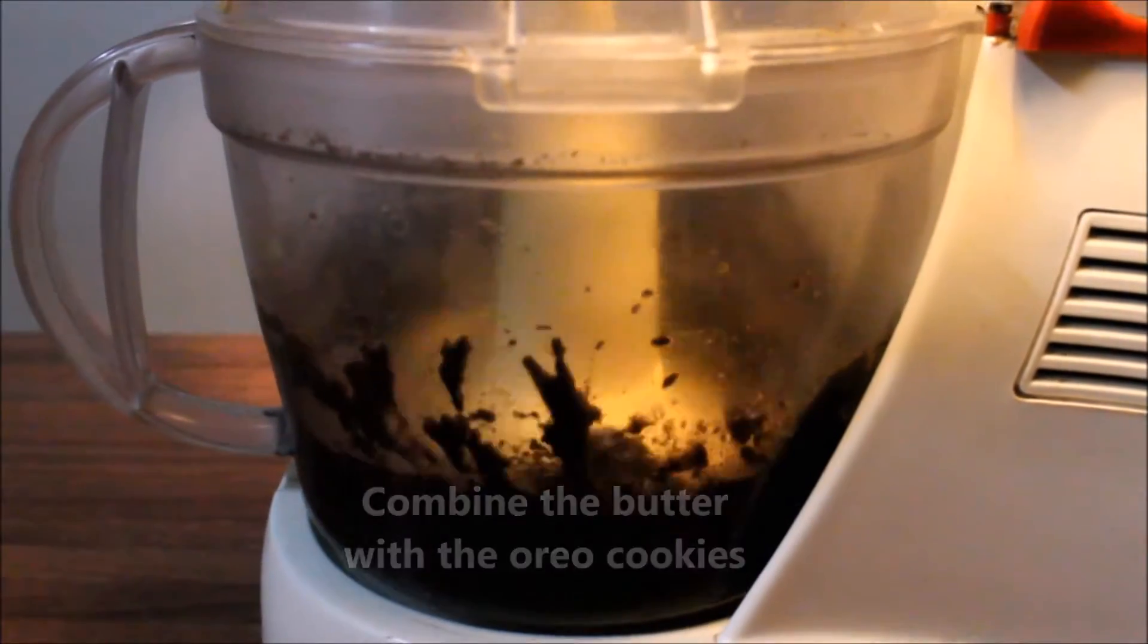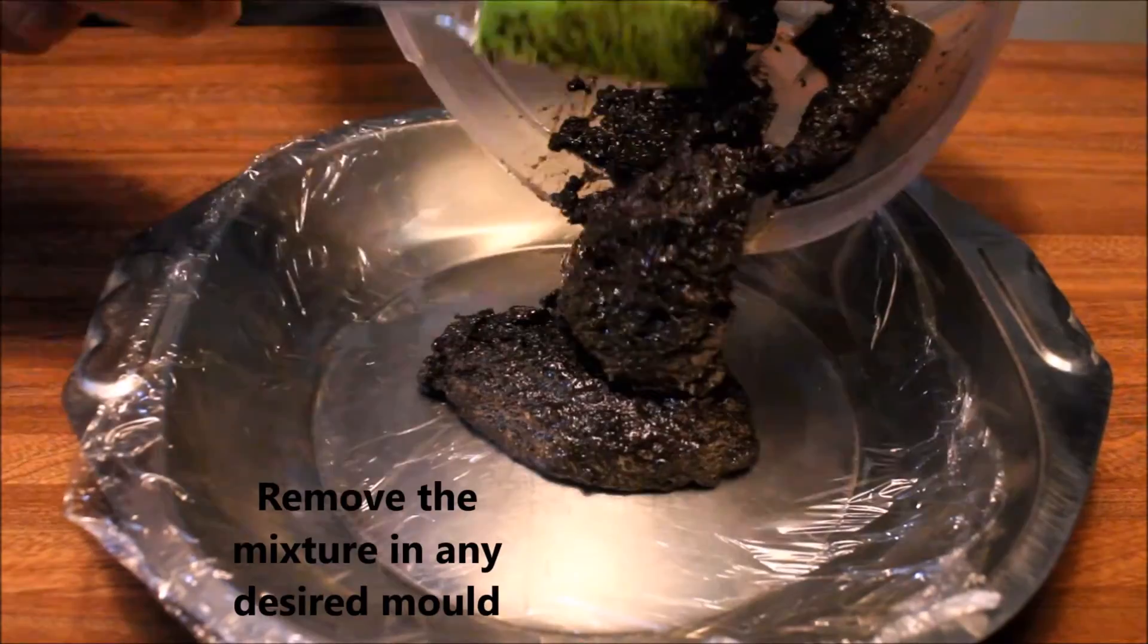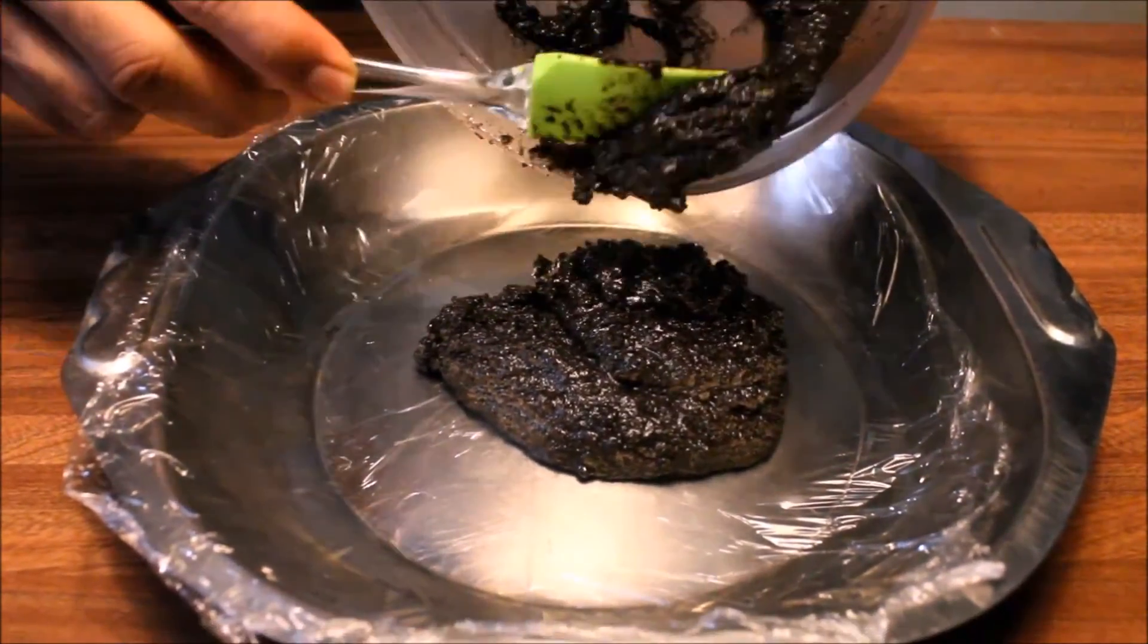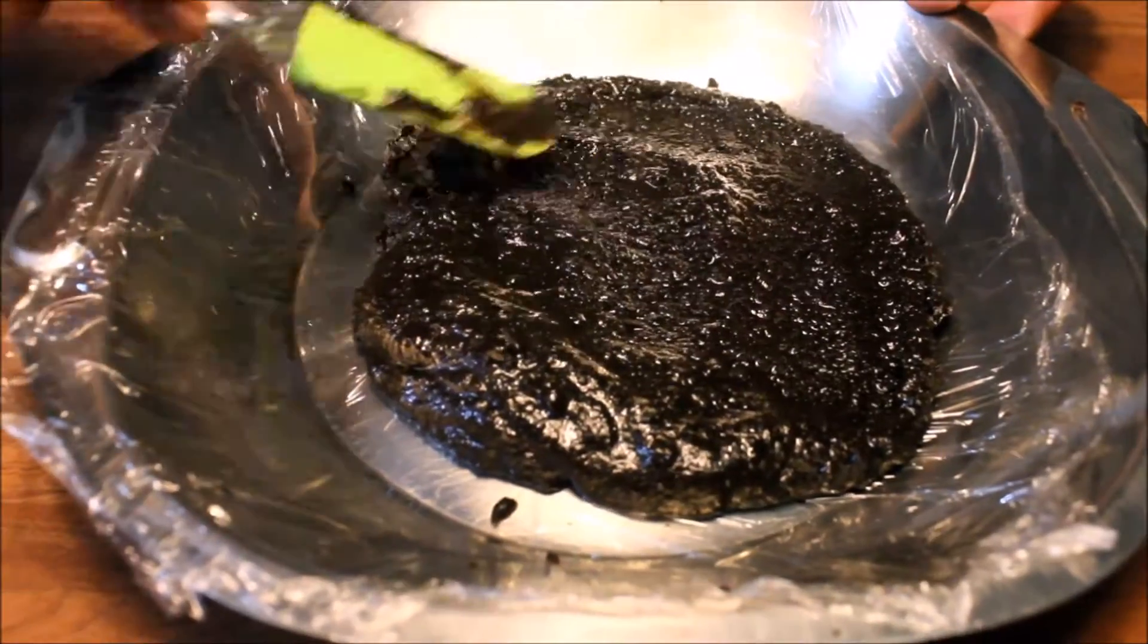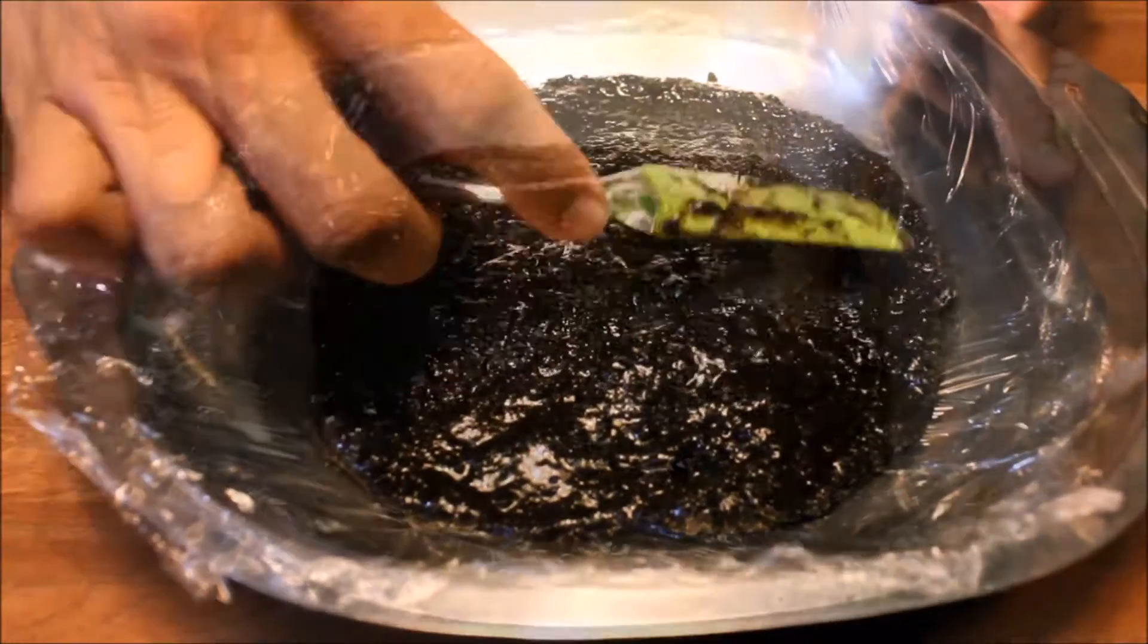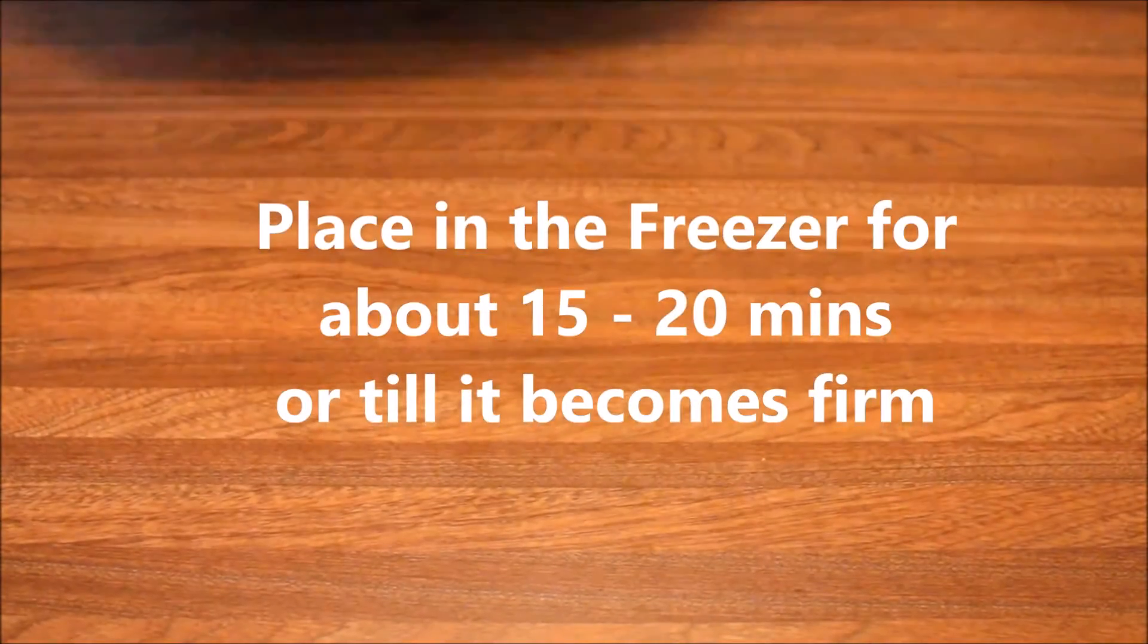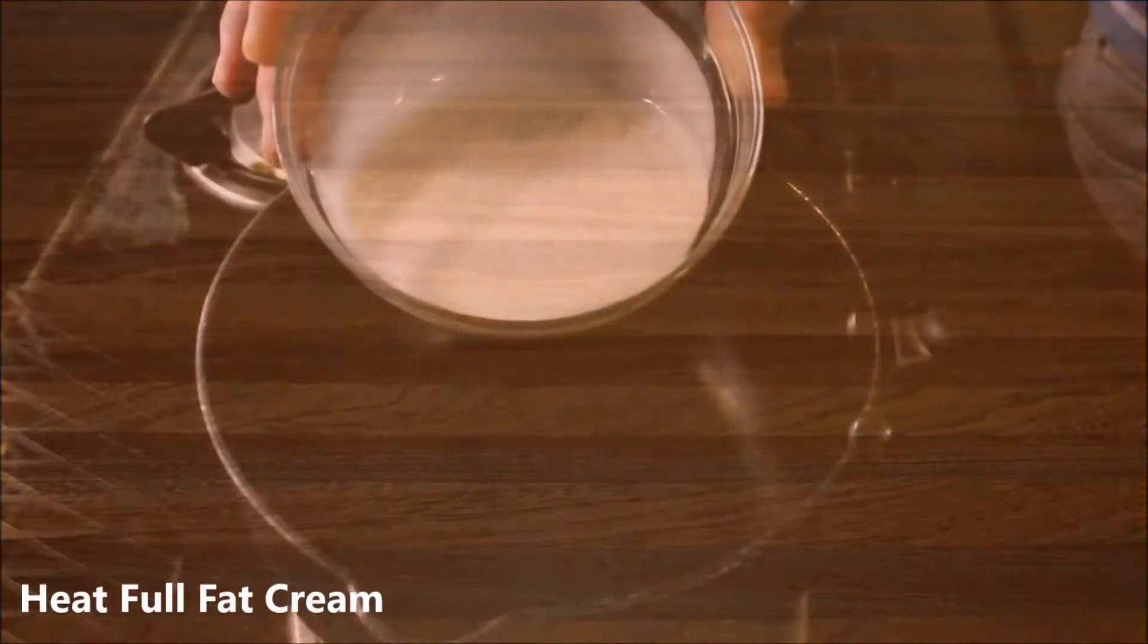Now combine this butter with the Oreo cookies and then place it into a desired mold. Any mold of your choice should do. Just make sure that you cover or line the mold with a cling foil or a silver foil. Just spread the mixture evenly and then place it in the freezer for about 15 to 20 minutes or till it becomes firm.